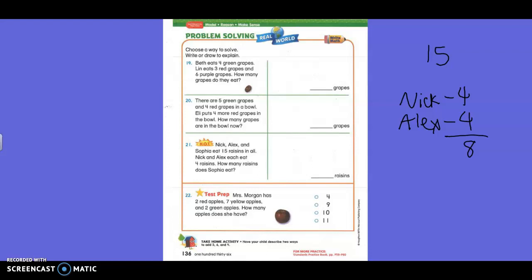Fifteen is one less than that. So what's one less than eight? Everybody? Seven. So how many raisins did Sophia eat? Seven. Seven. All right. I think you can do number 22 as well. So that's the only one we're going to do together. You guys can do all the rest.